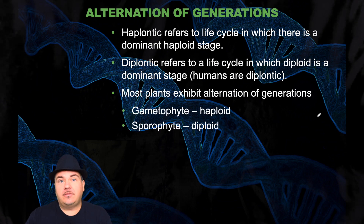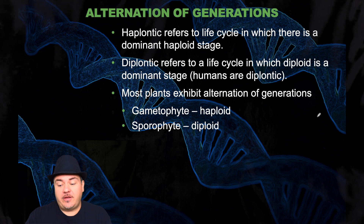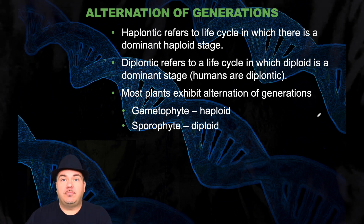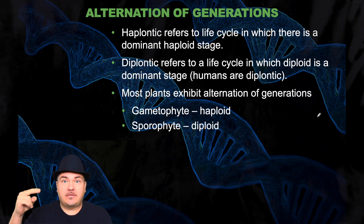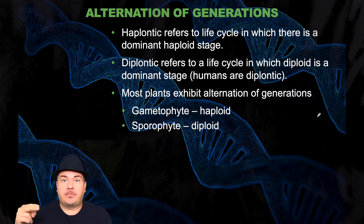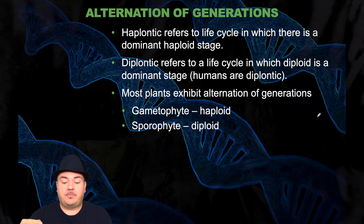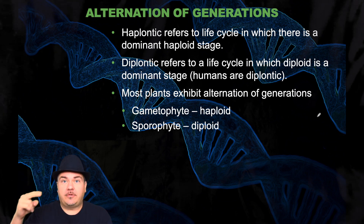Most plants exhibit what's called alternation of generations, which is very different. In plants, one generation is haploid, and the next generation — their kids — are diploid. The generation after that — the grandkids — are haploid again, and the great-grandkids are diploid again. So it alternates generations: diploid, haploid, diploid, haploid, diploid, haploid.